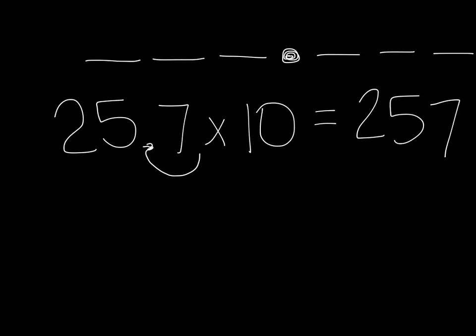Opposite, if I were to take 25.7 multiply times a hundred, I would simply move my decimal two places over to make it a hundred times larger. Every place value you move is ten times larger or ten times smaller, depending on the direction you are moving.